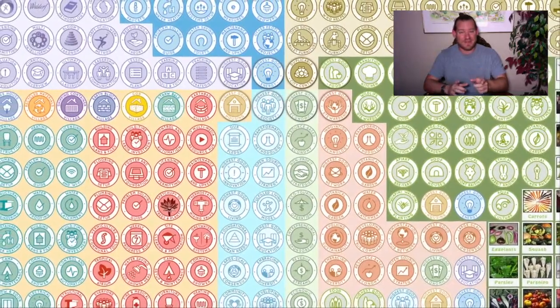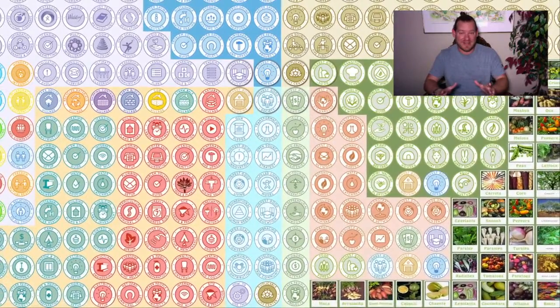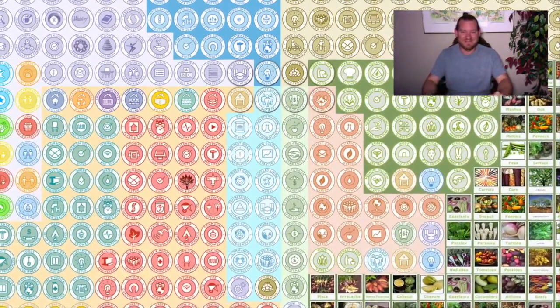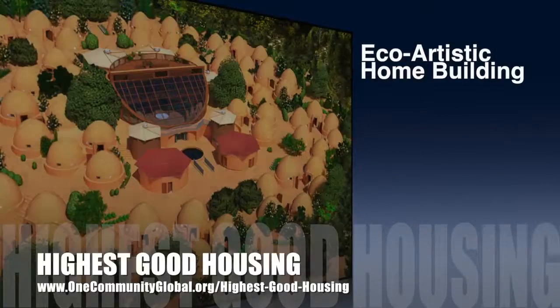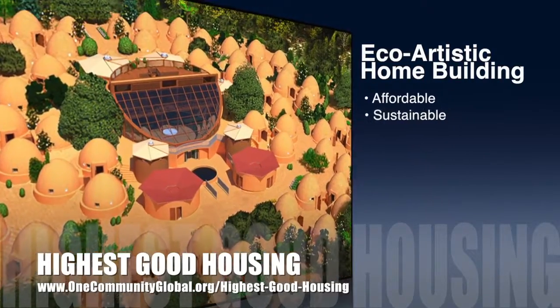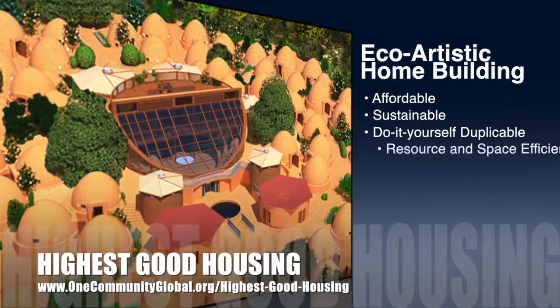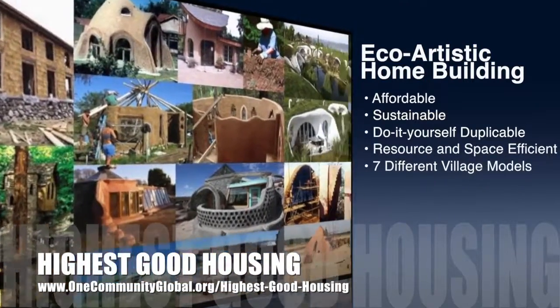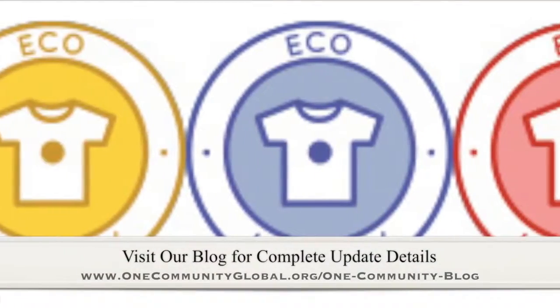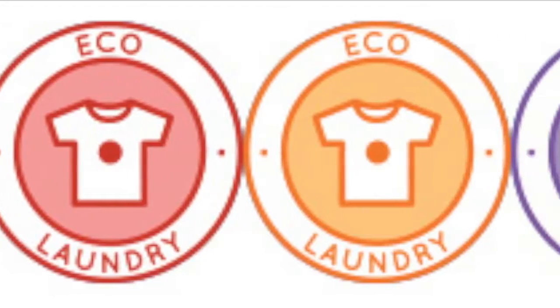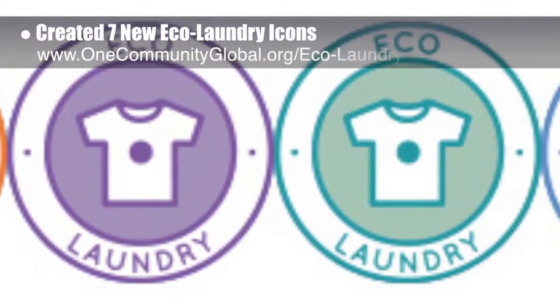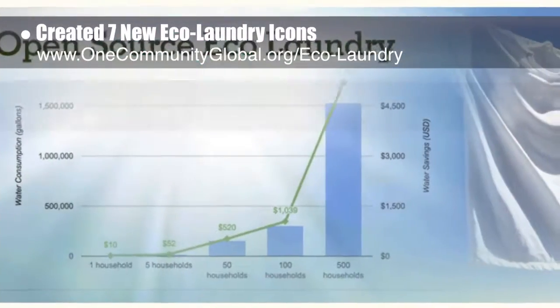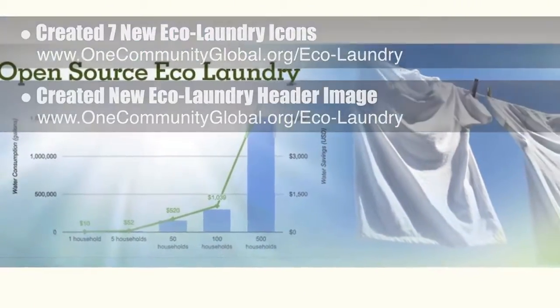Now let's jump into one week of our team's progress and accomplishments. One Community's approach to highest good housing is eco-artistic home building that is affordable, sustainable, do-it-yourself duplicable, resource and space efficient, consisting of seven different sustainably constructed village models. This week, the core team — which includes pioneer members plus those helping who don't wish to be individually acknowledged — created seven new eco-laundry icons and created a new eco-laundry header image.